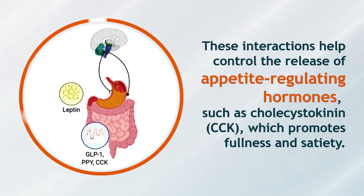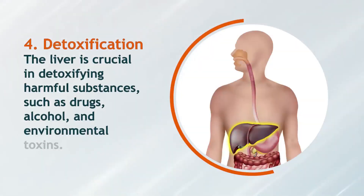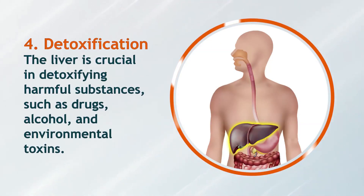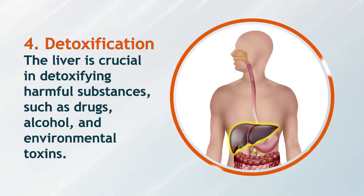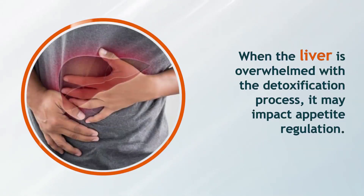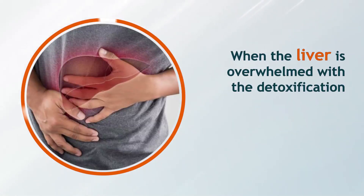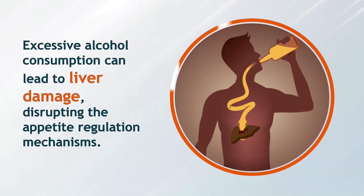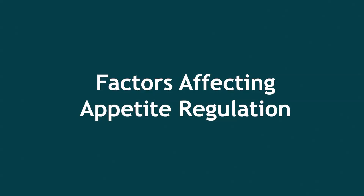These bile acid interactions help control the release of appetite-regulating hormones such as cholecystokinin (CCK), which promotes fullness and satiety. Regarding detoxification, the liver is crucial in detoxifying harmful substances such as drugs, alcohol, and environmental toxins. When the liver is overwhelmed with the detoxification process, it may impact appetite regulation, and excessive alcohol consumption can lead to liver damage, disrupting these mechanisms.